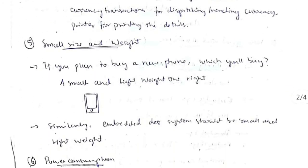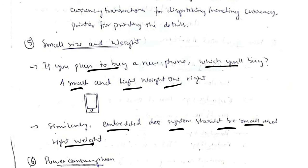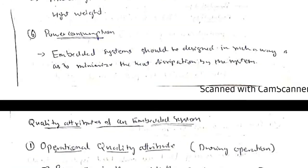The fifth characteristic is small size and weight. Just as you'd prefer a small and light phone, embedded systems should also be designed to be small and lightweight. A major consideration is power consumption: heat is produced whenever the device is used, so the embedded system should minimize heat dissipation. The lesser the heat dissipation, the better the product.